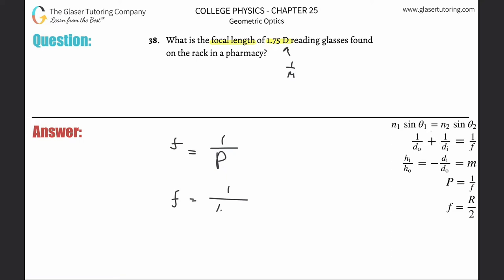Or aka 1.75 diopters. They already gave it to us that way in the problem. So this is nice and simple. So this is 1 divided by then 1.75.